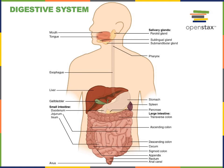The jejunum is the long middle segment of the small intestine and is the location where the majority of nutrient absorption occurs. The jejunum has a highly folded surface to increase its surface area. There are large folds called the plica circularis, with smaller folds called the villi on top of the plica, and then microscopic folds of the plasma membrane of the lining cells called microvilli. This system of folds on top of folds on top of folds creates an extremely large surface area in the jejunum for nutrient absorption.